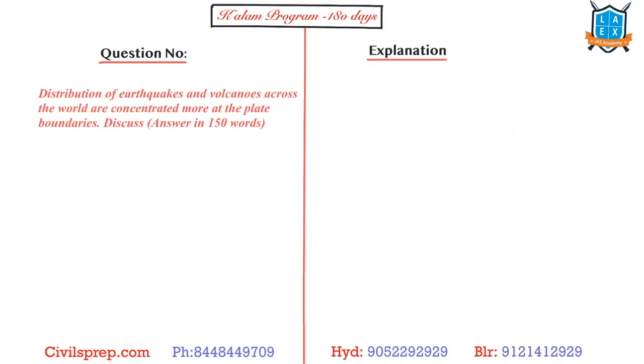Then, distribution of earthquakes and volcanic eruptions across the world are concentrated more at the plate boundaries. Discuss. Now for these type of questions you need to talk first about earthquakes which are associated with either release of energy through elasticity or breakdown of the rocks which are present, or you need to talk about the volcanoes which are mainly associated with the magma flow coming through the joints which are present.